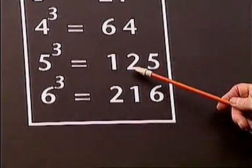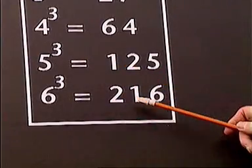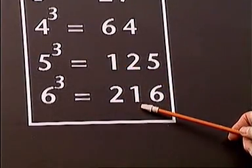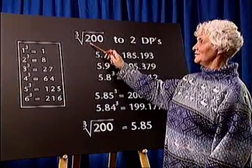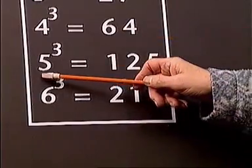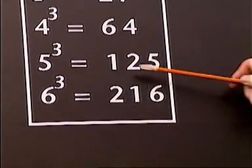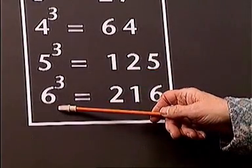5 cubed is 125, 6 cubed is 216. So we know that our estimate of the cube root of 200 must lie somewhere between 5 and 6, but nearer to 6.